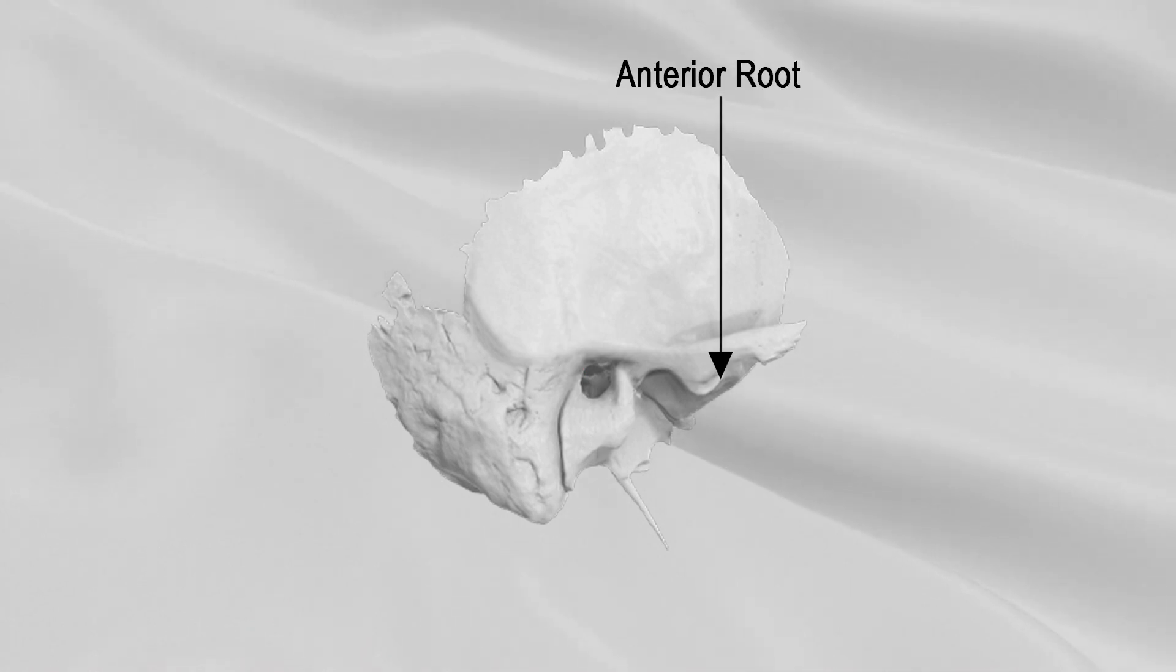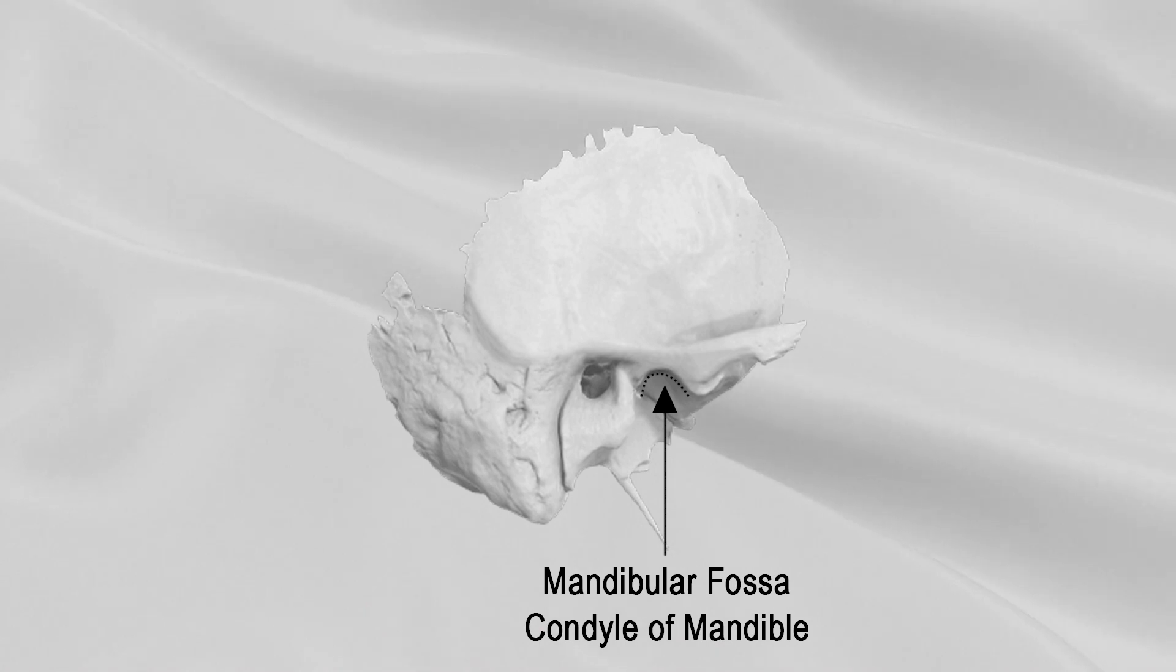The anterior root of the posterior end of zygomatic process is a prolongation of the lower border. It is short and broad and ends in a rounded eminence, the articular tubercle. The mandibular fossa is an oval depression behind the anterior root, which receives the condyle of the mandible. It is bounded in front by the articular tubercle, behind by the tympanic part of the bone, which separates it from the external acoustic meatus.